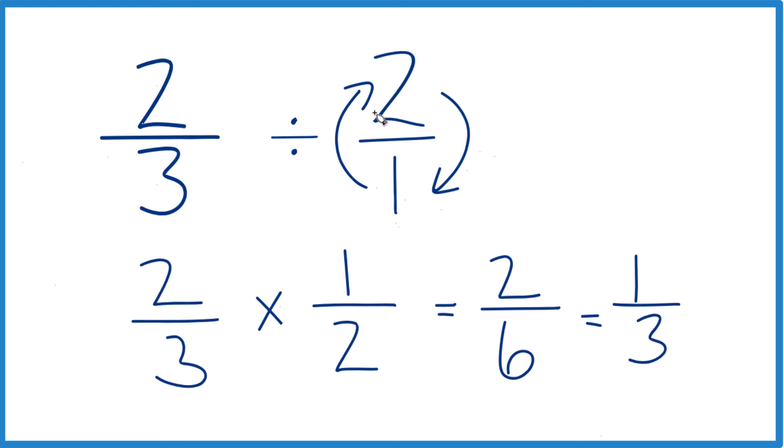So two-thirds divided by two, we end up with one-third, or you could say two-thirds times one-half, and that gives you one-third as well.